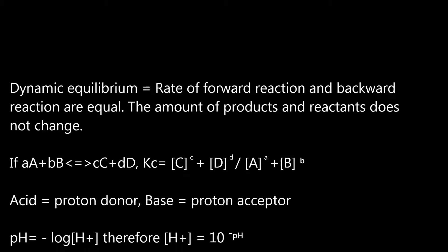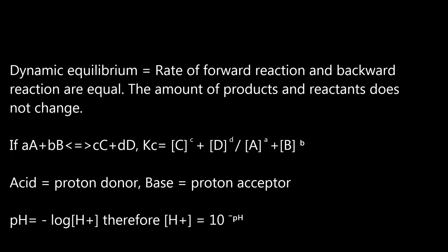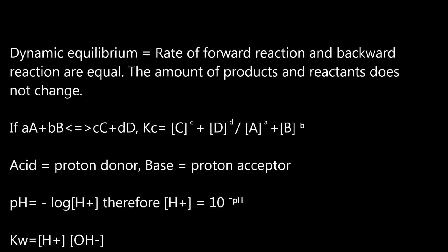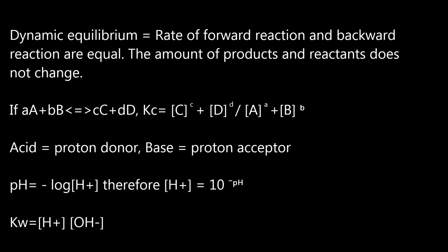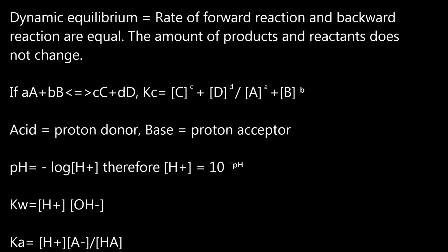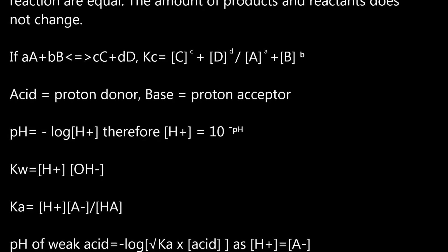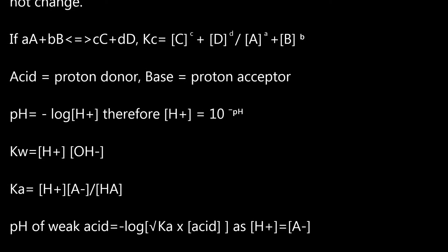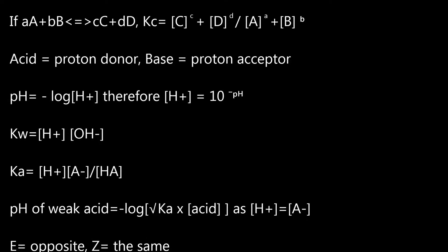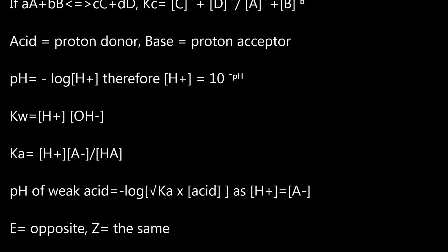pH equals minus log H plus, therefore H plus equals 10 to the minus pH. Kw equals H plus times OH minus. Ka equals H plus times A minus over HA. pH of weak acid equals minus log square root of Ka times acid, as H plus equals A minus.